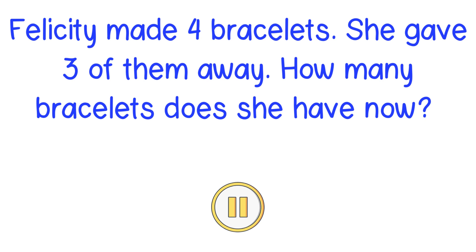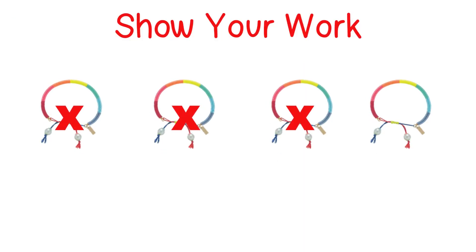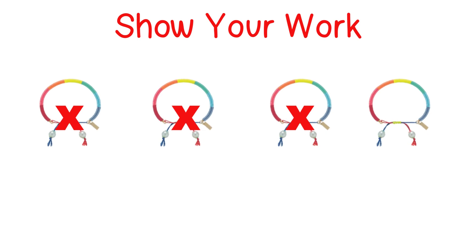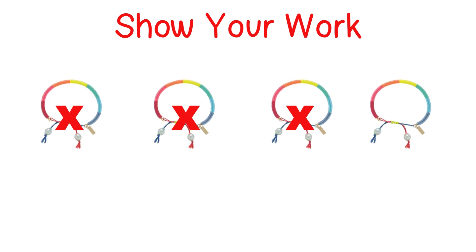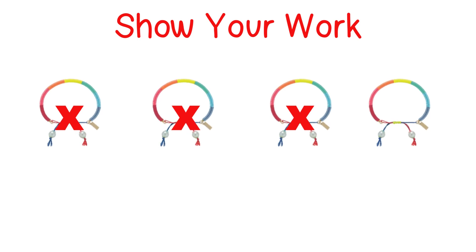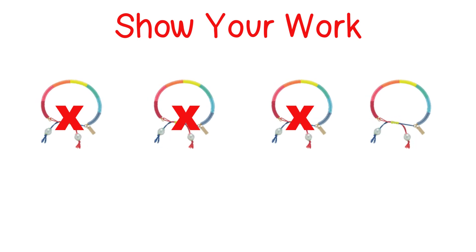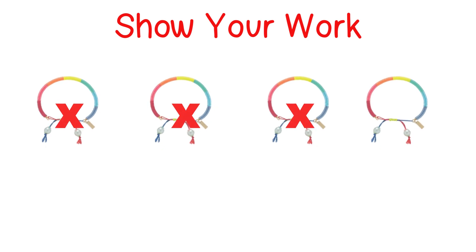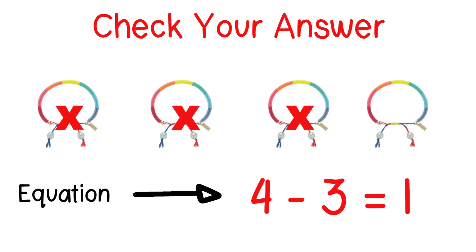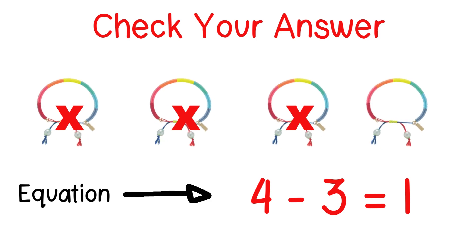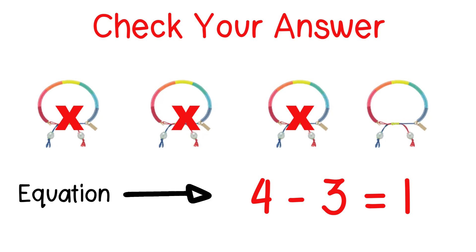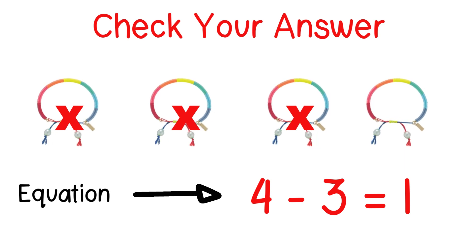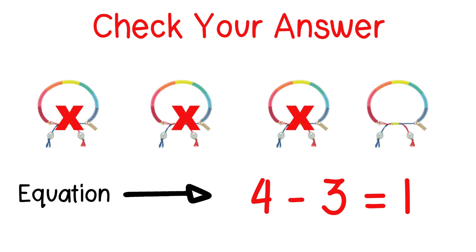I want you to try to draw a picture to match what's happening in the problem. This will be a good time to pause the video so you can work out the problem. Here's my picture that shows the four bracelets Felicity started with and what happened when she gave three bracelets away. I'll pause to give you a moment to count out the answer. When you start with four and you take away three, you are left with one. Notice how my equation matches the word problem: four minus three equals one.